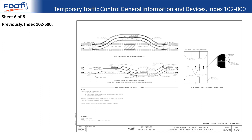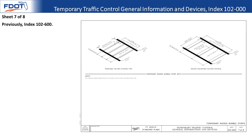Sheet six of eight: the big addition on this sheet is RPM placement on multi-lane roadways. Previously there had only been an RPM placement detail for two-lane two-way roadways. Some of the details have also been cleaned up slightly.